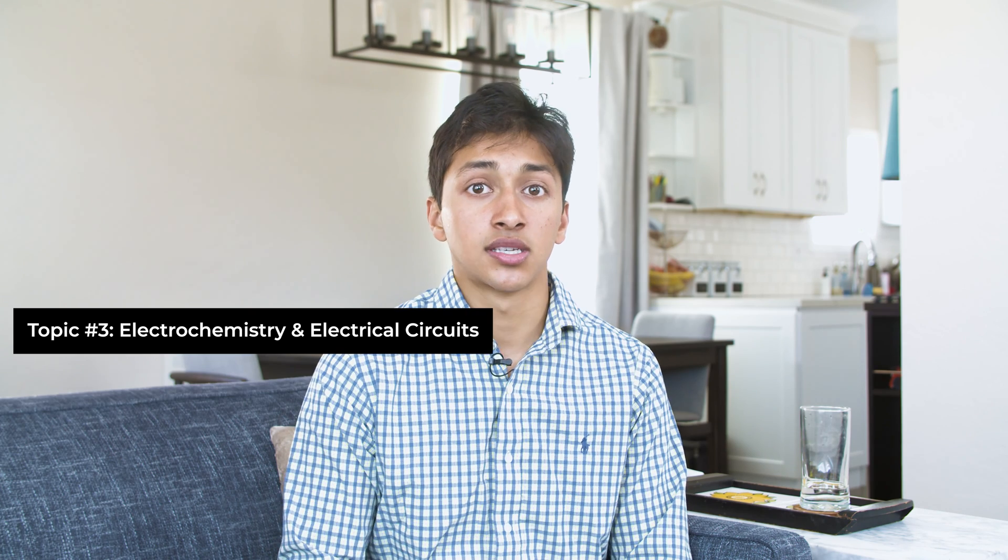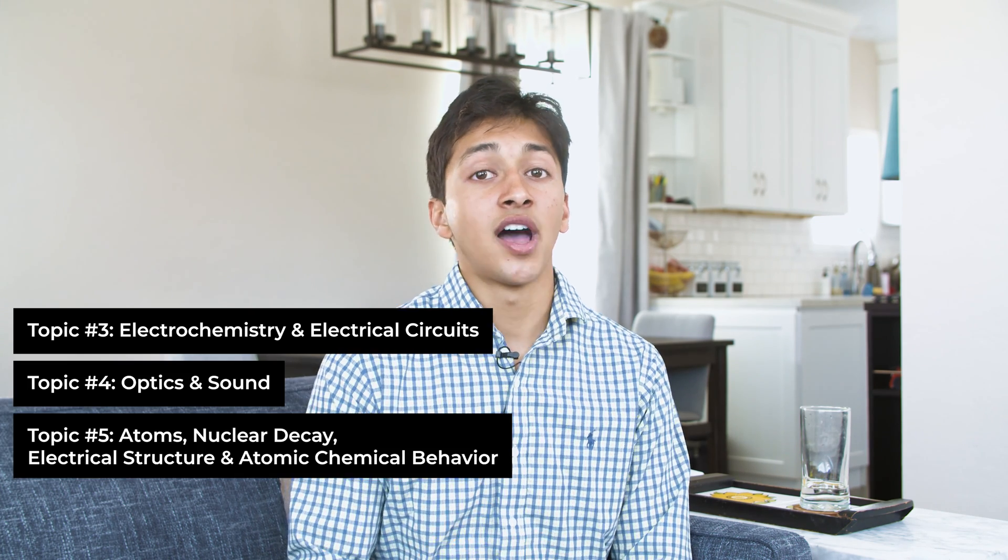We will now mention the remaining topics in the chem-phys section and you can apply the strategies and takeaways we have talked about to topics 3 through 10. Topic 3 covers electrochemistry and electrical circuits. Topic 4 covers optics and sound. Topic 5 covers atoms, nuclear decay, electrical structure, and atomic chemical behavior.